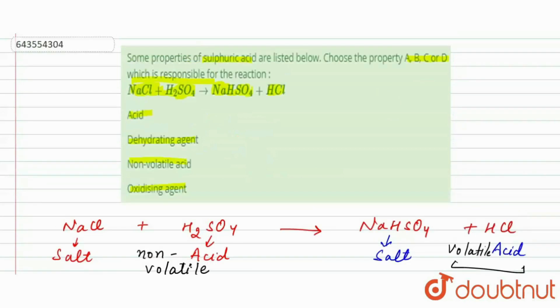But the difference is that H2SO4 is non-volatile in nature, HCl is volatile in nature. So here for this question our answer is non-volatile acid. Thank you.